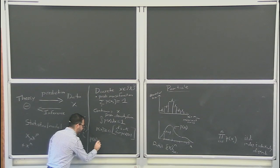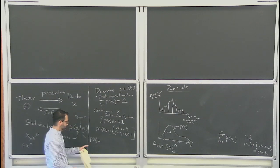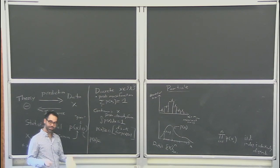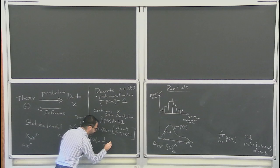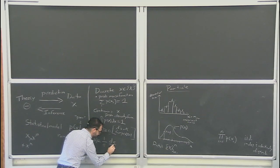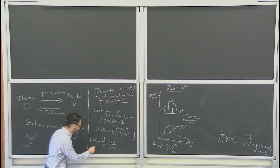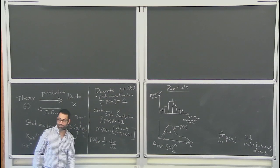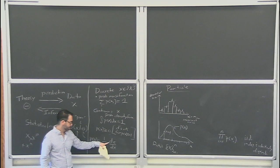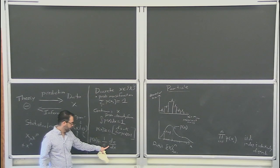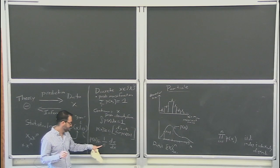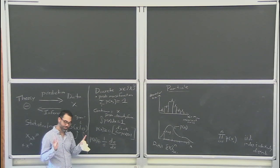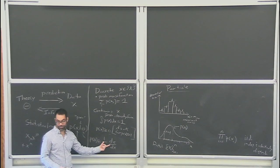It's worth making the connection that in the particle physics case, P of X — this probability density — is one over the total cross section times the differential cross section dσ/dX. So you can put three equal signs if you want: this is the particle physics. There's a differential cross section, and you just normalize it so that when you integrate it up, you get one. Even more interesting: what feels more fundamental — this probability or the differential cross section?